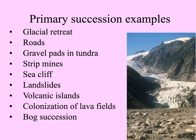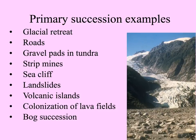Here's a long list of examples of primary succession. A glacier retreating, as we see in this picture, leaving bare rocky ground. Roads covering up the landscape with concrete and pavement — eventually they break up and may be colonized. In the tundra, gravel pads are laid down for oil drilling. Strip mines lay soil and rock bare. There are also sea cliffs, landslides, volcanic islands rising out of the sea, lava fields, and succession on the top of water.